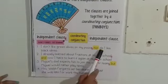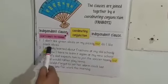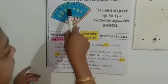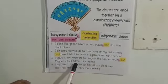Next example: 'I already learned about fractions at my old school, and now I have to learn it again at my new school.' Here 'and' is the coordinating conjunction. This compound sentence has two independent clauses joined by a coordinating conjunction. Next: 'Michael's dad expects him to join the soccer team, but Michael would rather play tennis.' Here 'but' is the coordinating conjunction.